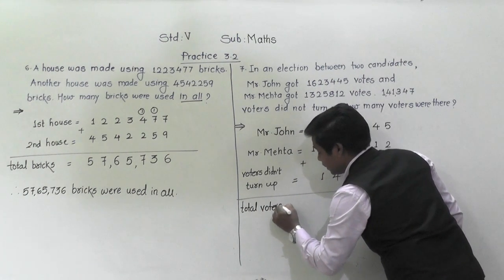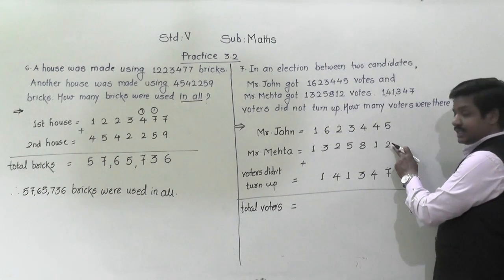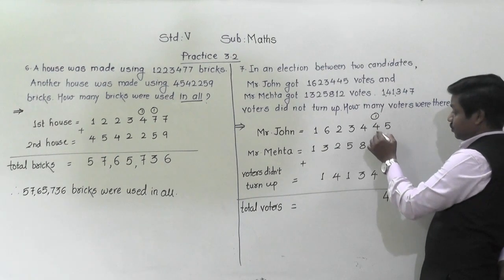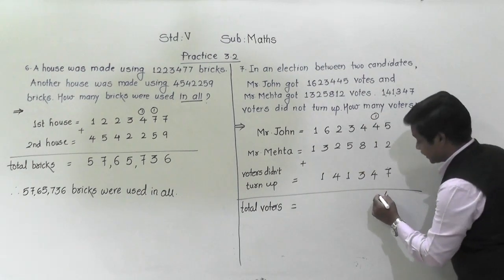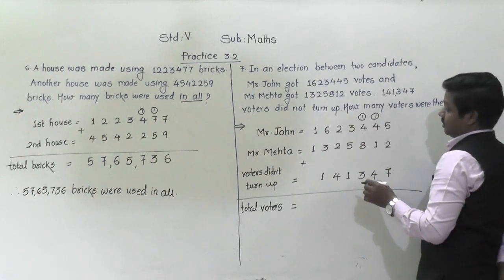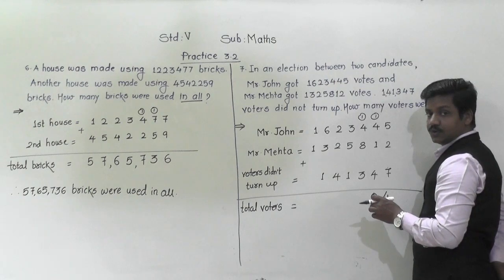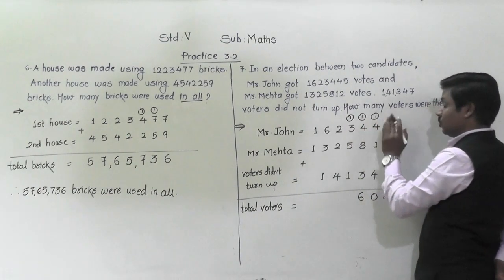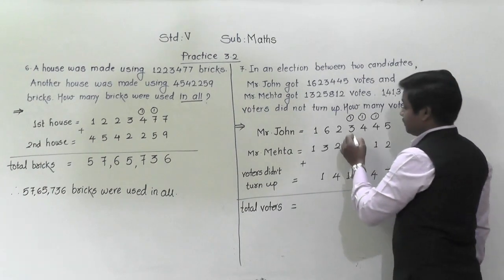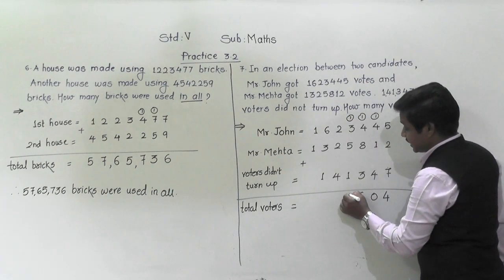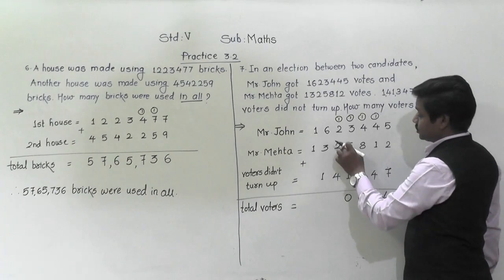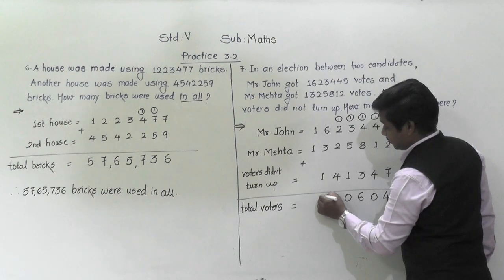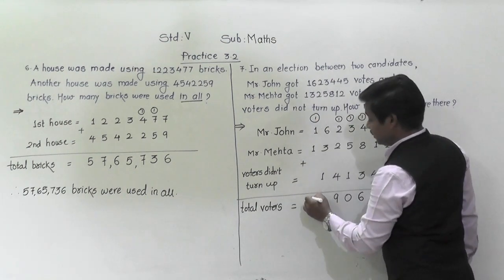Let's add: 5 plus 2 is 7. 7 plus 7 is 14 — 4 comes down, 1 carried. 4 plus 1 is 5, and 4 plus 1 is 5 — so 5 and 5 is 10, 0 comes down, 1 carried. 8 plus 4 is 12, plus 3 is 15, plus 1 is 16 — 6 comes down, 1 carried. 5 plus 3 is 8, plus 1 is 9, plus 1 carried is 10 — 0 comes down, 1 carried. 2 plus 2 is 4, plus 4 is 8, plus 1 is 9. 6 plus 3 is 9, plus 1 is 10 — 0 comes down, 1 carried. 1 plus 1 is 2, plus 1 is 3.